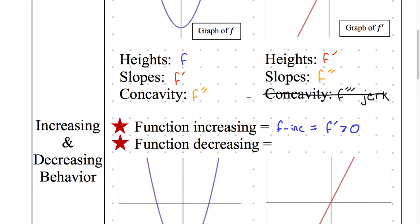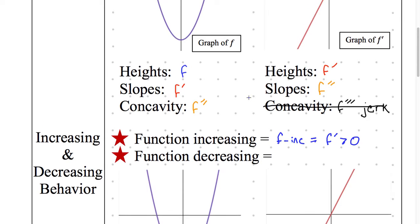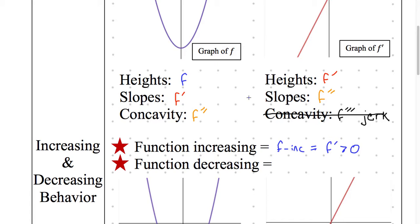Does F prime is greater than zero mean the slope is greater than zero or does it apply to the height? It always applies to just F prime. It might be the slope. It might be the height. It depends on what graph I'm looking at. If I'm looking at the graph of F, F prime is now the slope. If I'm looking at a graph of F prime, I'm looking for the height. That's why it's just important to just know it's F prime. It might look different in different graphs.